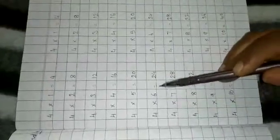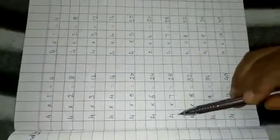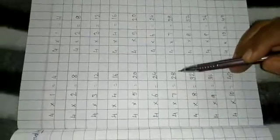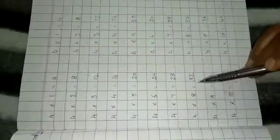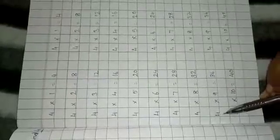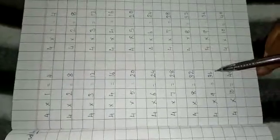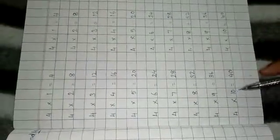4 6s are 24. 4 7s are 28. 4 8s are 32. 4 9s are 36. 4 10s are 40.